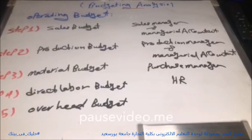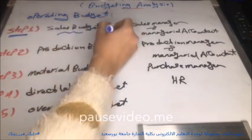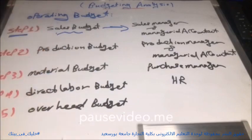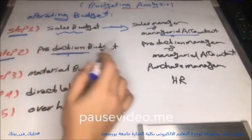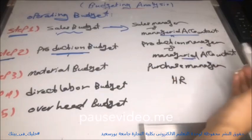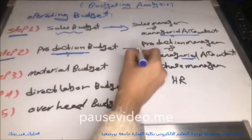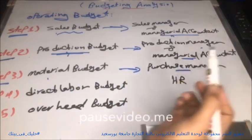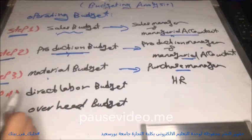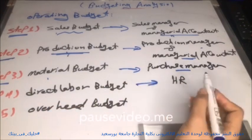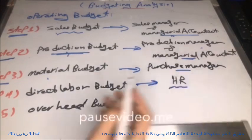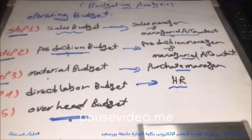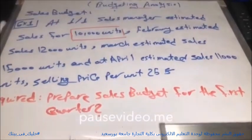We will start with operating budget. How to prepare operating budget? Step one: we make the sales budget, prepared by the sales manager and managerial accountant. Step two: prepare production budget — the production manager and managerial accountant are responsible. Step three: we make the material budget. Step four: direct labor budget, made by the HR or human resource manager. Step five: overhead budget.